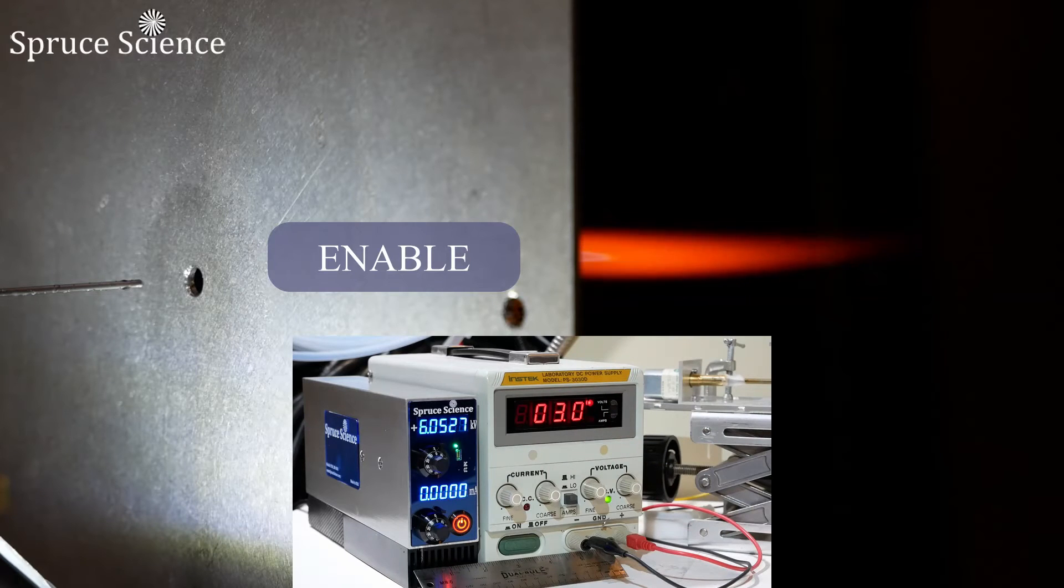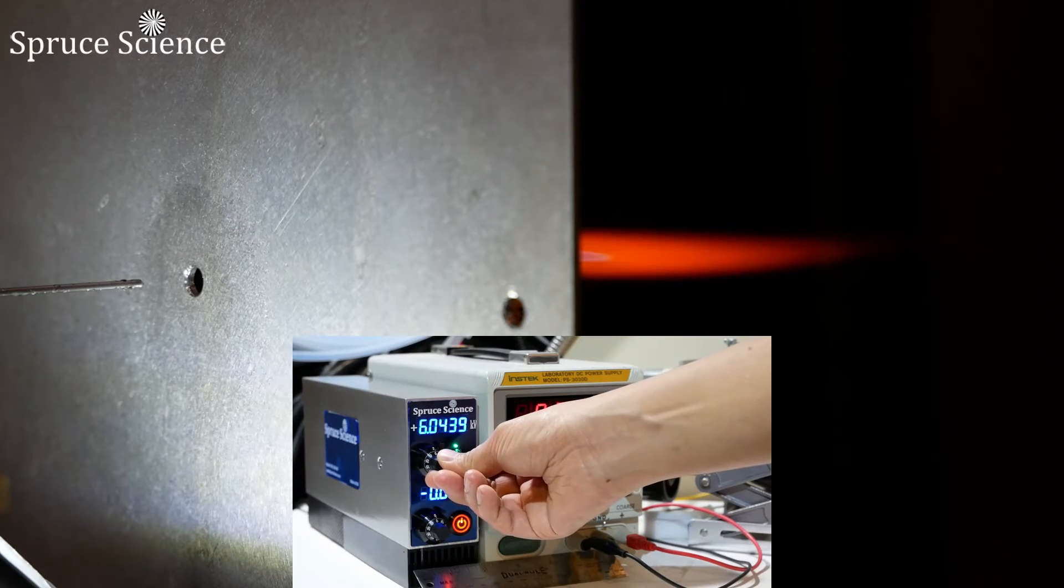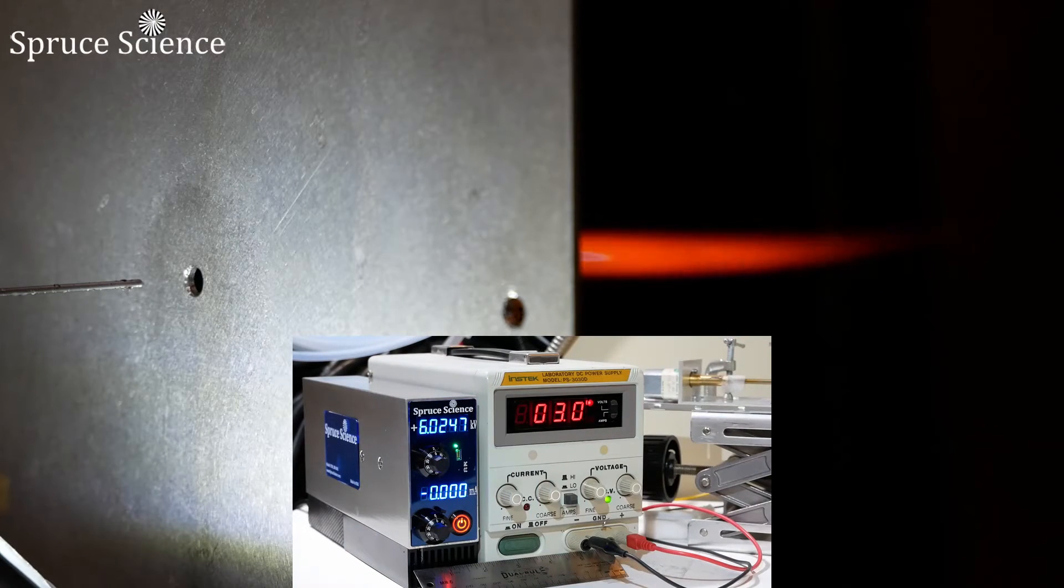As you can see, the flame color changes because thermal energy excites the sample molecules to a higher energy state and their transition back to a lower energy state leads to photon emission with unique wavelengths that are characteristic of the sample molecule.